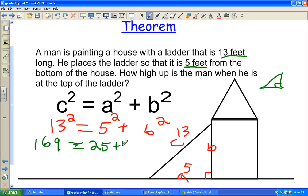And then 5 times 5 is 25. And, of course, we still have B squared. Whoops. B squared.